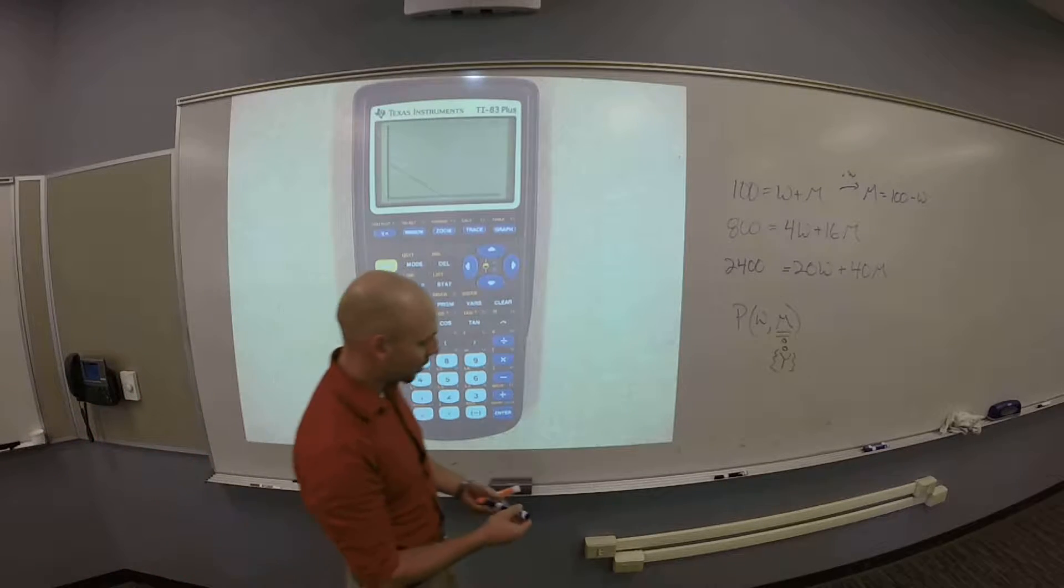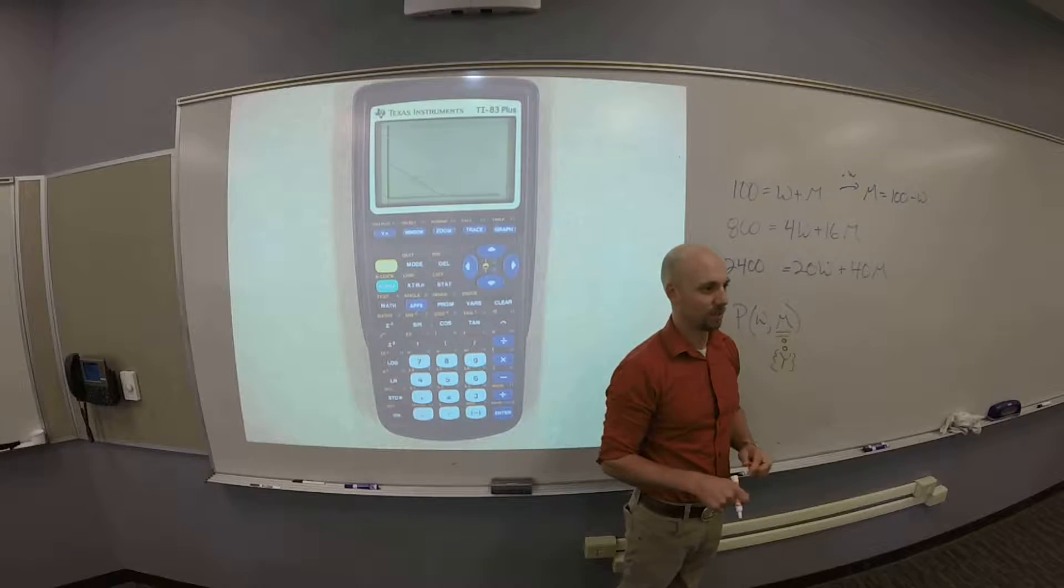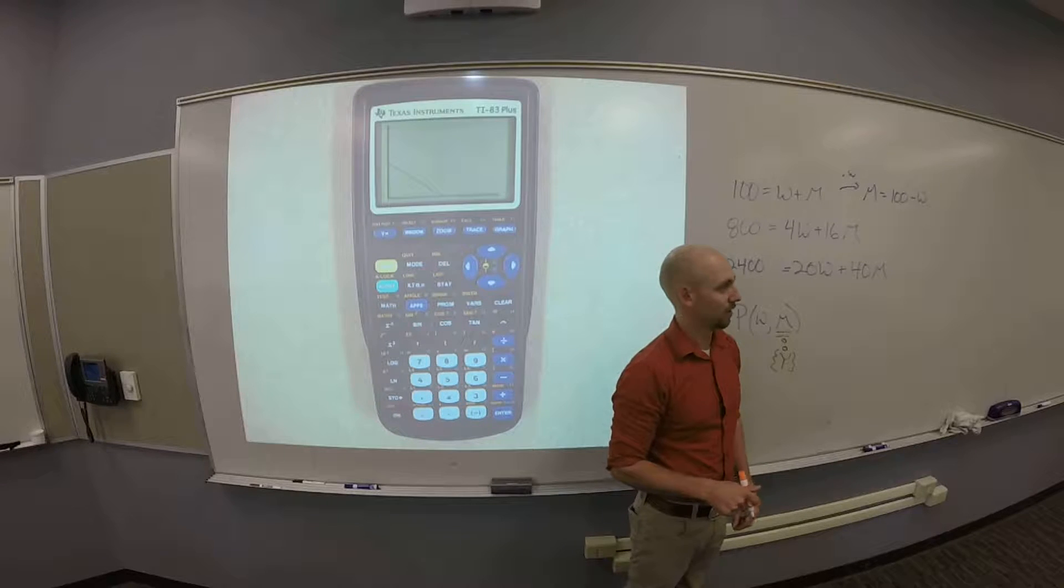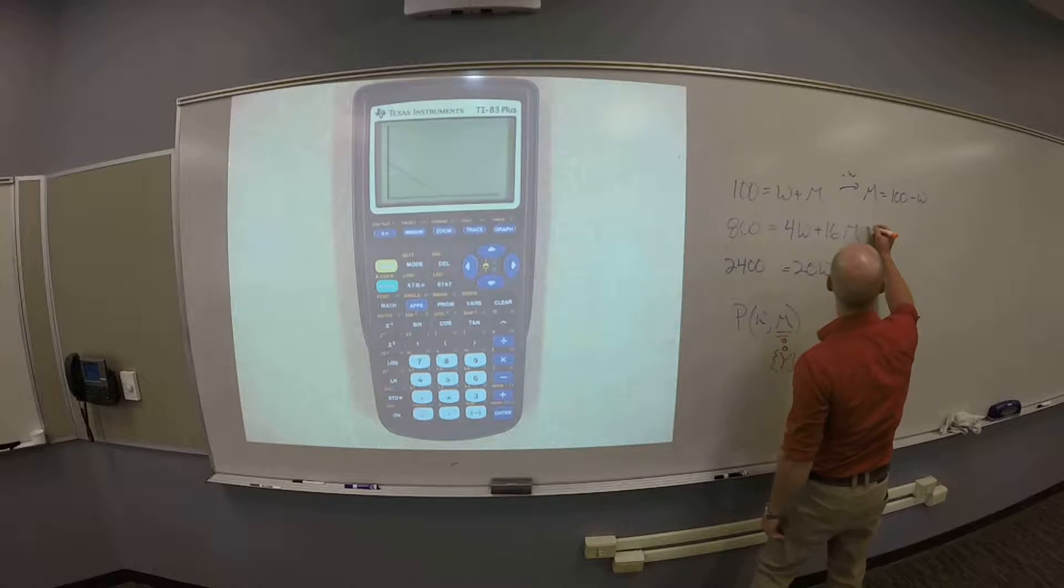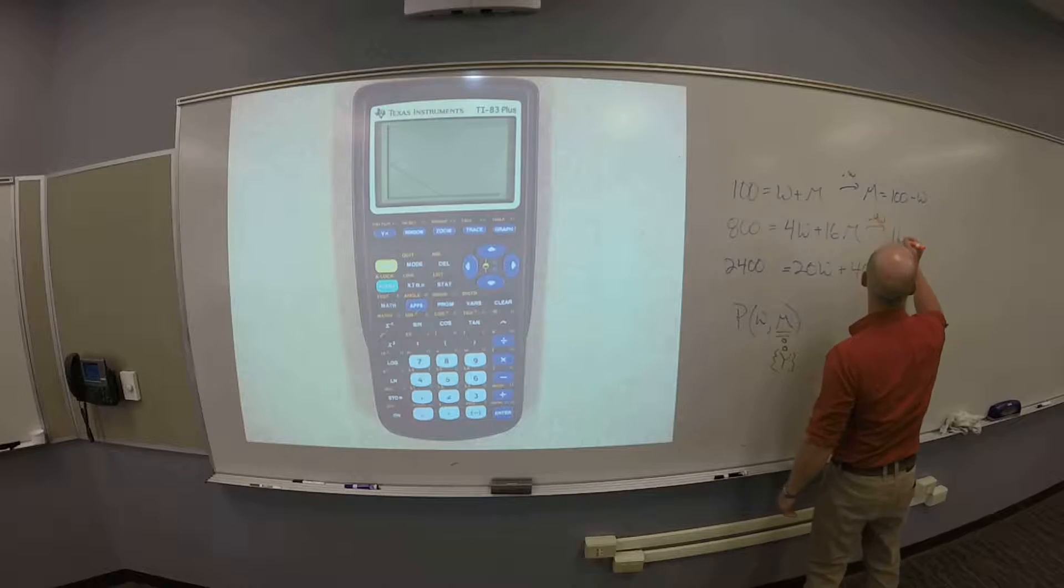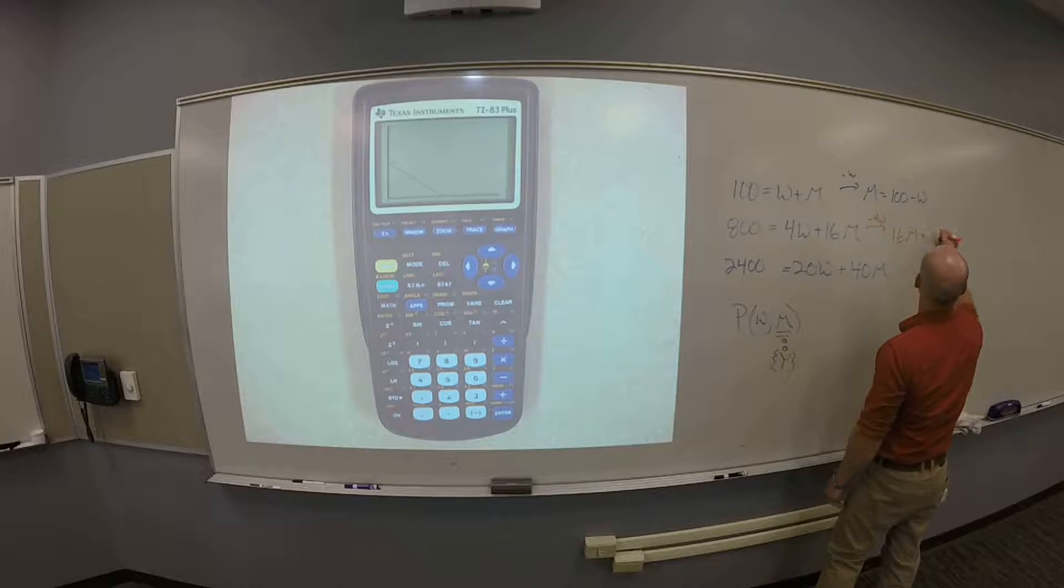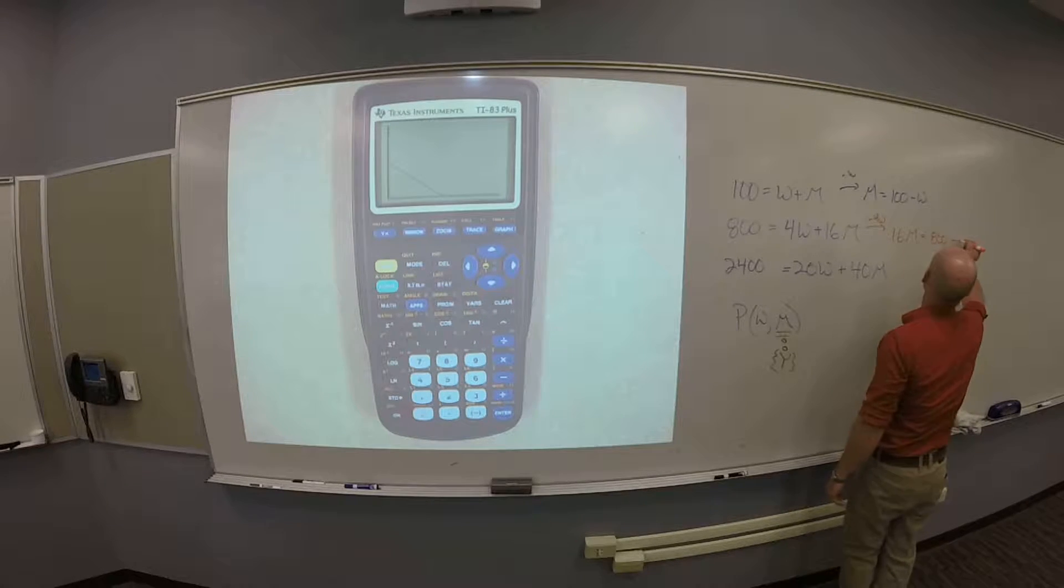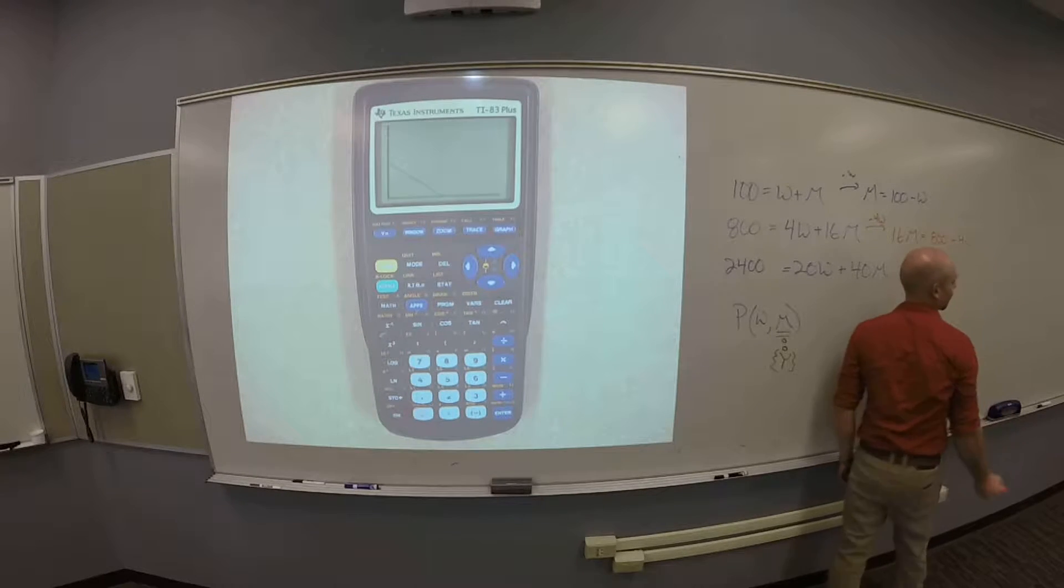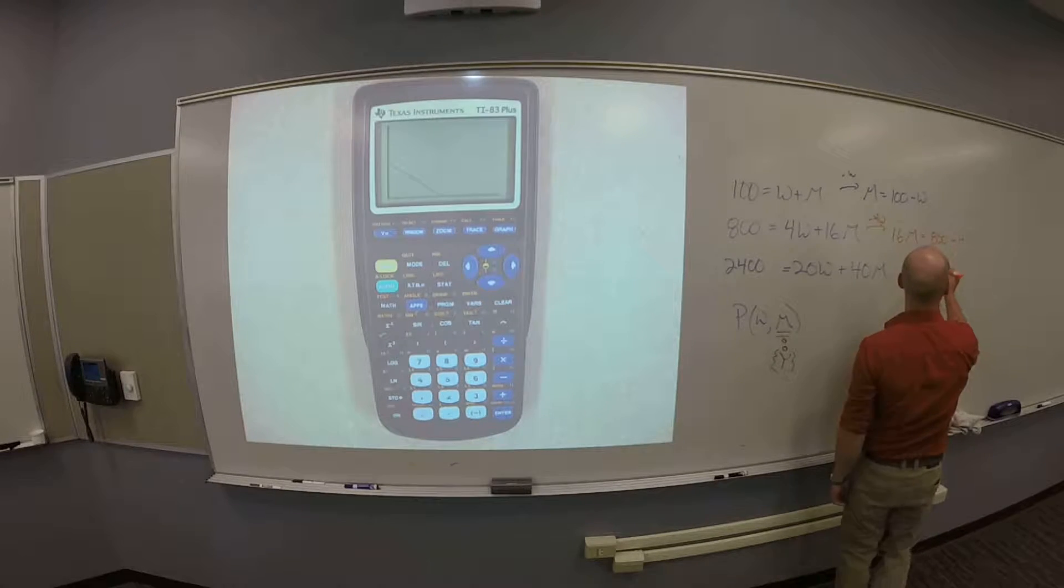Cool? All right. So, how do I get the other line? Like, here's another one. What do I do first? Subtract 4W. Yeah, I still want to solve for M. So, I'm going to subtract 4W. So, that'll get me to 16M is 800 minus 4W, and then what? Divided by 16.